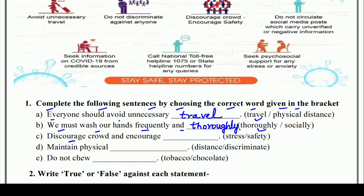Then next is: discourage crowd and encourage — safety ya stress? Crowd ko discourage karein yani bheed ikhatti na hone dein, aur kiski encourage karein — stress ko ya safety ko? Toh iska answer is safety — S-A-F-E-T-Y, safety. Then next is: maintain physical — distance ya discriminate? Maintain physical distance — D-I-S-T-A-N-C-E, distance. Then: do not chew — tobacco ya chocolate? Kya nahi chabaana chahiye? Right answer is tobacco. Yani hume tambaku nahi khana chahiye, nahi chabaana chahiye. Yeh hamaari sehat ke liye bilkul bekar hai, haanikaarak hai, isse koi faayda nahi hone wala.